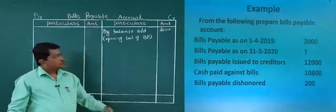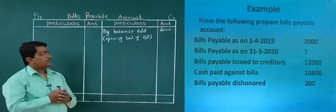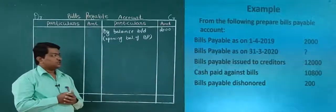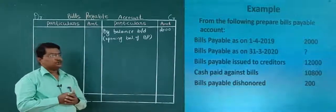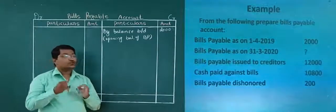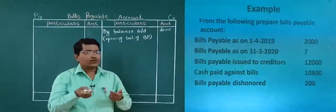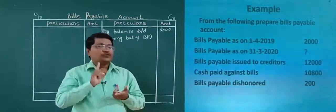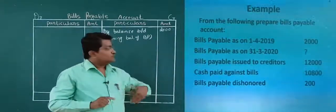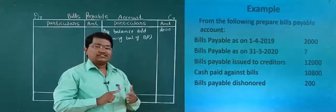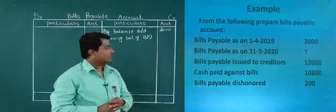Next, second one — bills payable as on 31st March 2020, that is the closing balance of bills payable. We need to find it out, so we will discuss that later.